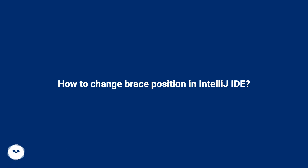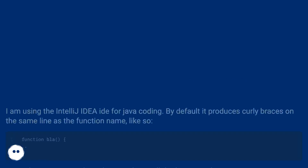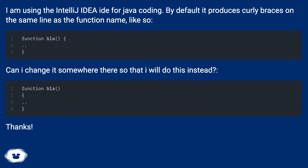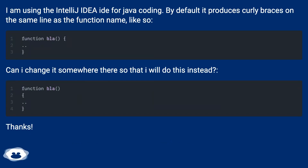How to change brace position in IntelliJ IDEA. I am using IntelliJ IDEA for Java coding. By default it produces curly braces on the same line as the function name, like so. Can I change it somewhere so that it will do this instead?